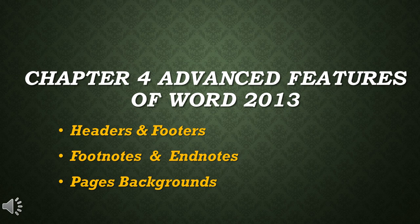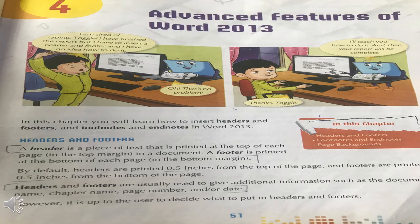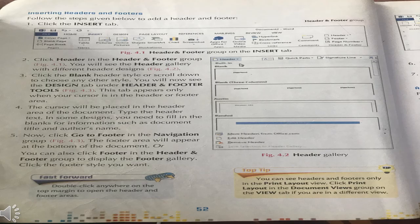First we'll see what headers and footers are. A header is a piece of text that appears at the top of each page — you can say it is the headline of the page. A footer is printed at the bottom of each page, that is the bottom margin where we write page numbers etc. Headers and footers are usually used to give additional information such as document name, chapter name, page number, or date.